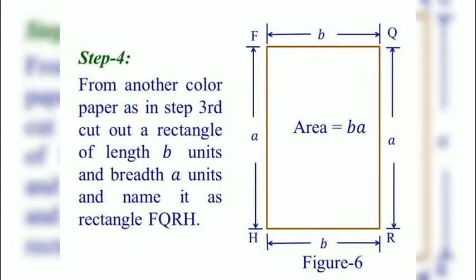Next step: From another color paper, cut out a rectangle of length B units and breadth A units and name it rectangle FQRH. Here in figure 6, FQRH is a rectangle having length B units and breadth A units, and its area is BA square units.